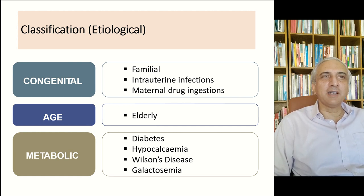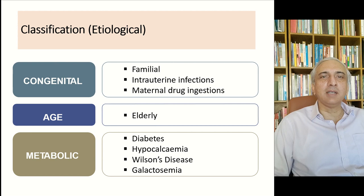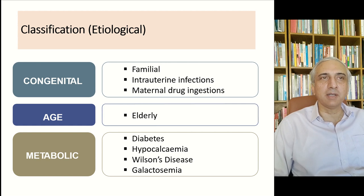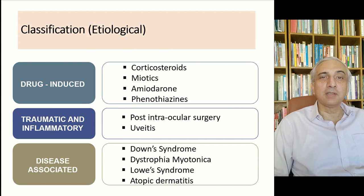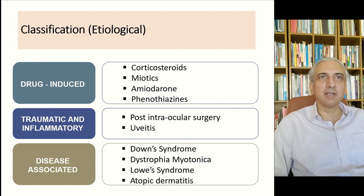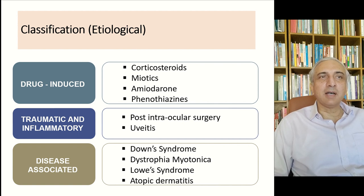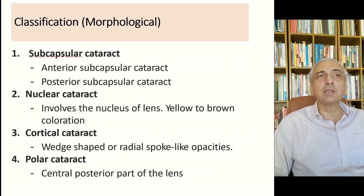For classification, the etiological classification includes: congenital cataract — familial, due to intrauterine infections, or maternal drug ingestion; senile cataract with age; metabolic cataracts including diabetes, hypocalcemia, Wilson's disease, and galactosemia; drug-induced cataracts including corticosteroids, miotics, amiodarone, and phenothiazines; traumatic and inflammatory cataracts including post-intraocular surgery and uveitis; and disease-associated cataracts such as Down syndrome, dystrophia myotonica, Lowe syndrome, and atopic dermatitis.